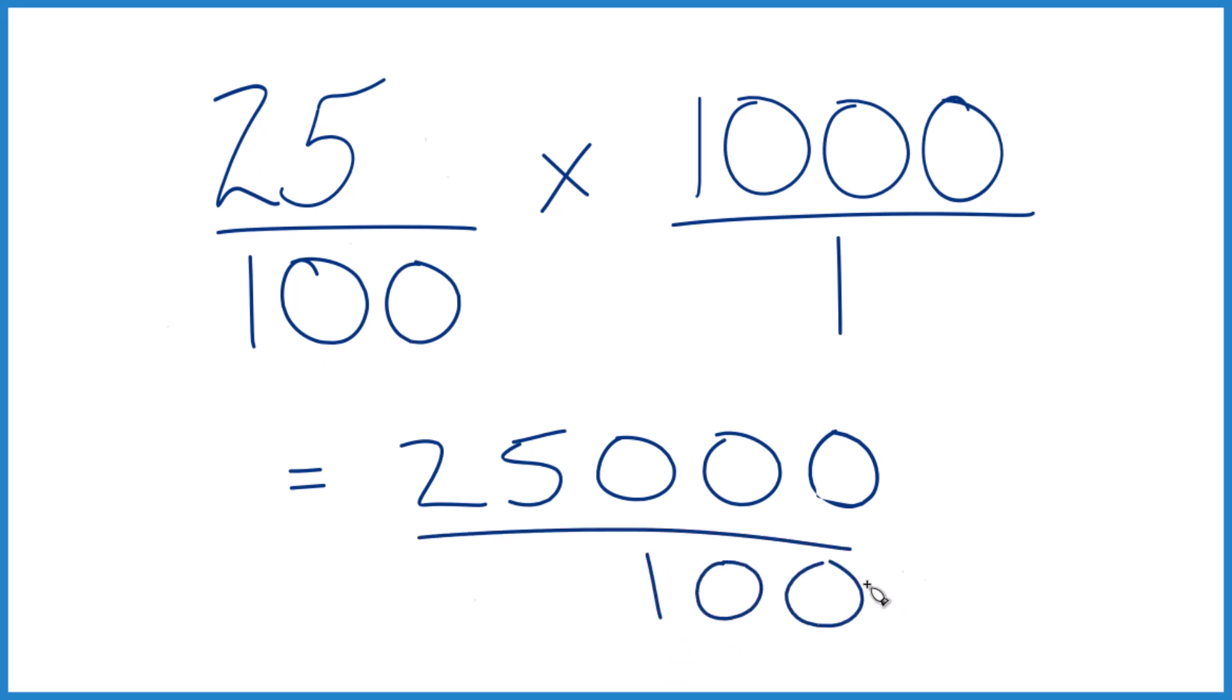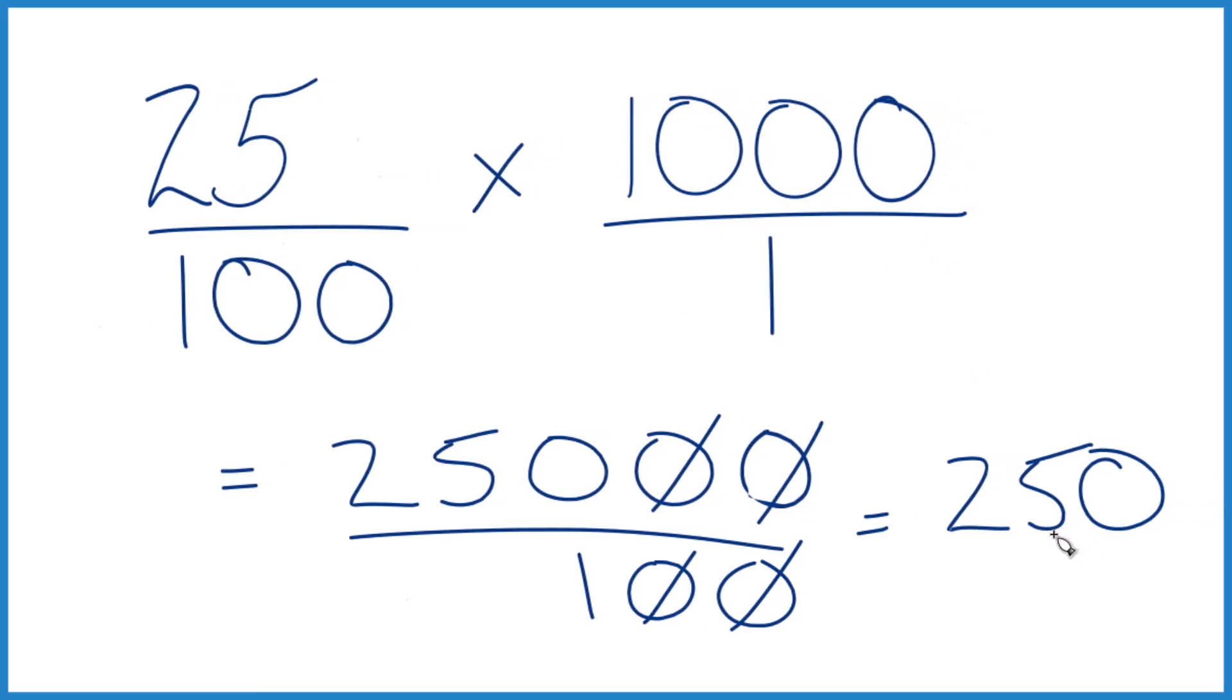So we're going to divide, and it looks like we end up with 25,000 divided by 100 is 250. Same thing as we got before. So 25% of 1,000, 250.